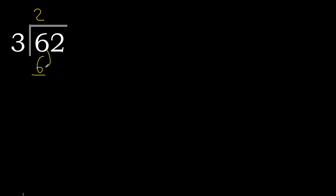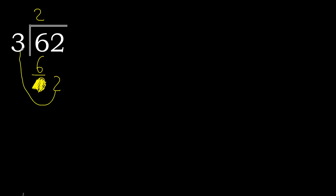6 minus 6 is 0. Eliminate 0 on this side. 2 — 2 is less, therefore complete. There is no number, therefore complete. Always complete with 0 — 2 numbers.